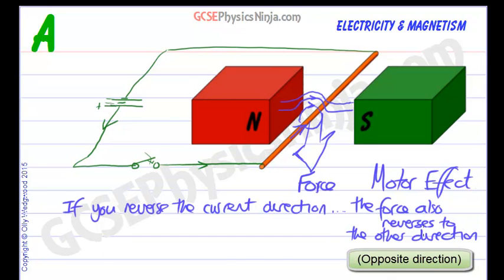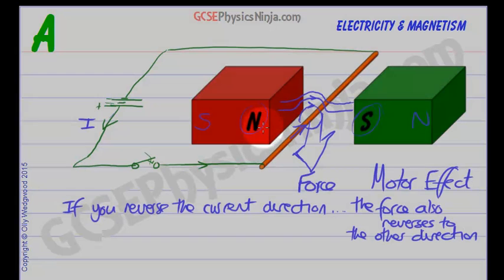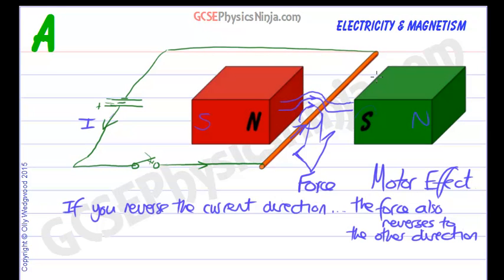What if you kept the current flowing in the same direction but you flipped the magnet around? So we'll put the north pole over here for example instead of the south pole and we'll put the south pole here. So this would mean that the lines of magnetic flux would flow that way from north to south. Well it's the same thing.